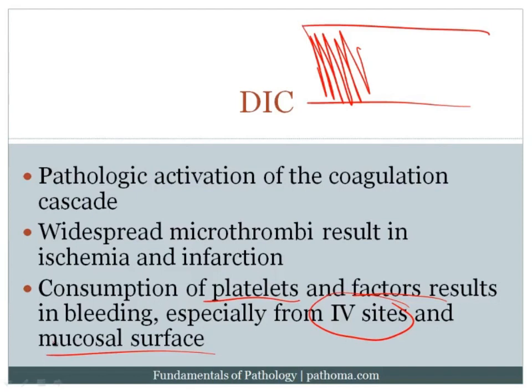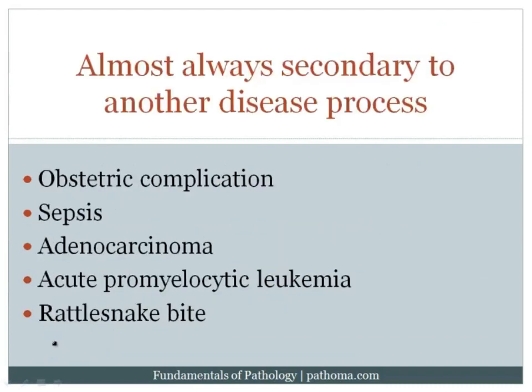DIC is like a yin and yang: clots block different tissues causing ischemia and infarction, while simultaneously consuming platelets and factors — resulting in bleeding elsewhere. Importantly, DIC is almost always secondary to another disease process. You get DIC because of something else. For example, an obstetric complication can result in DIC.